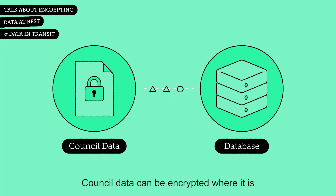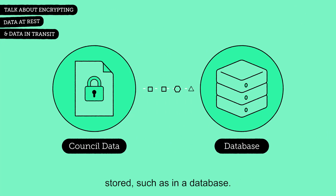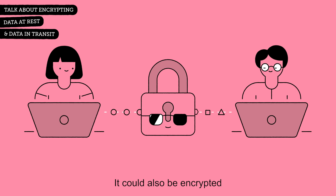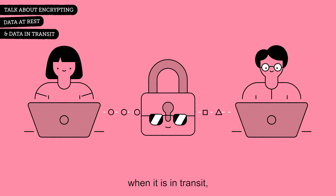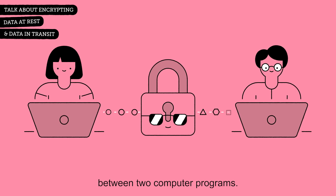Council data can be encrypted where it is stored, such as in a database. It could also be encrypted when it is in transit, like when being transferred between two computer programmes.